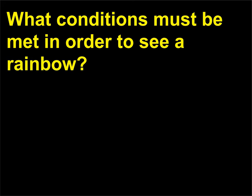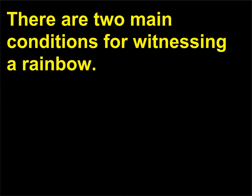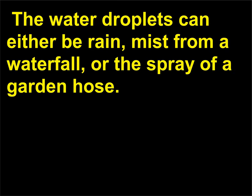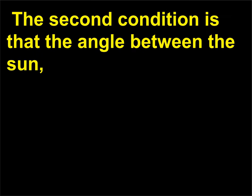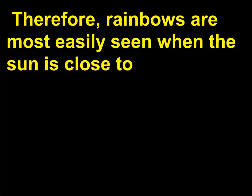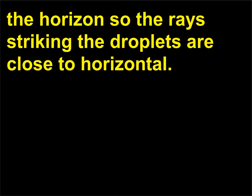What conditions must be met in order to see a rainbow? There are two main conditions for witnessing a rainbow. The first is that the observer must be between the sun and the water droplets. The water droplets can either be rain, mist from a waterfall, or the spray of a garden hose. The second condition is that the angle between the sun, the water droplets, and the observer's eyes must be between 40 degrees and 42 degrees. Therefore, rainbows are most easily seen when the sun is close to the horizon so the rays striking the droplets are close to horizontal.